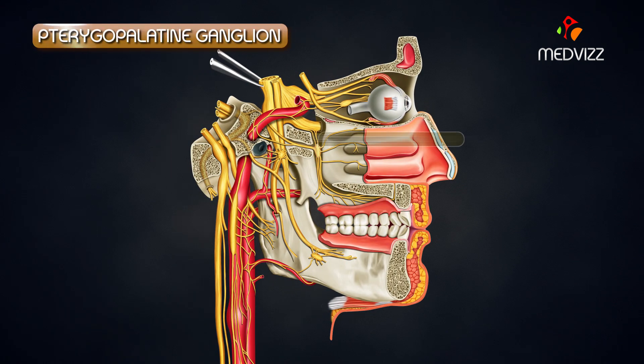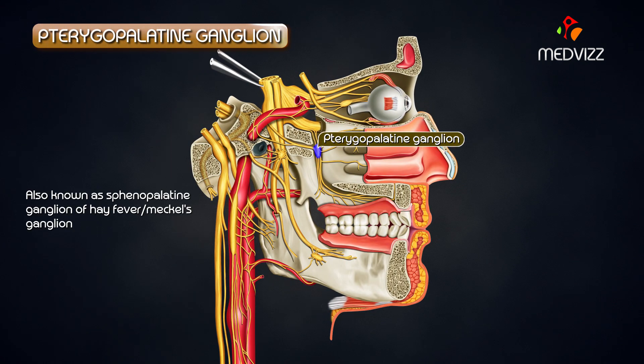Pterygopalatine ganglion, also known as the sphenopalatine ganglion of hay fever, or Mechel's ganglion.